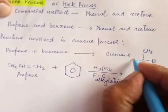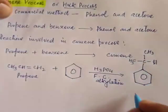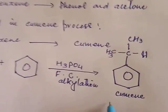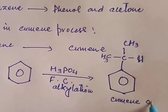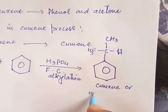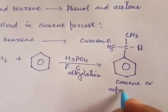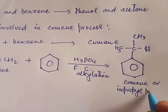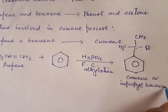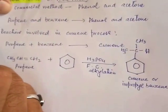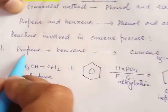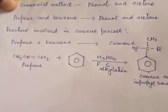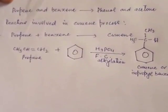The product cumene is formed, also known as isopropylbenzene. So the first step is the conversion of propene and benzene to cumene, or isopropylbenzene.